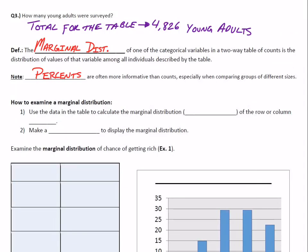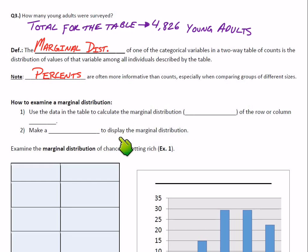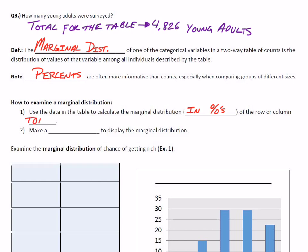For the marginal distribution, think about the root word 'margin.' If you could write things in the margins — on the side or underneath the table — you could write the percentages next to each variable. That's what a marginal distribution is. To examine one: use the data in the table to calculate the marginal distribution in percentages, writing the percents alongside the row or column totals, then make a graph to display it.